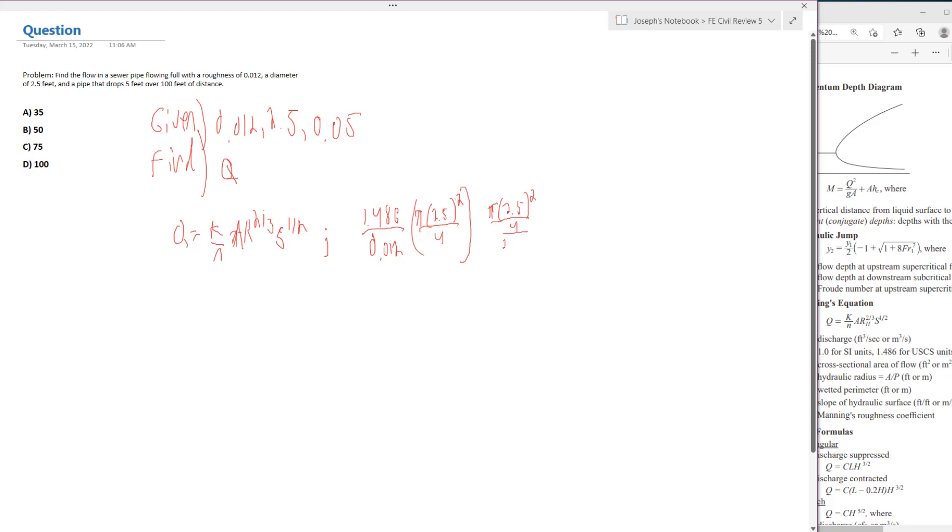So 2 pi, or d over 2 again, so 2.5 over 2. And this is all going to be raised to the 2 thirds power.